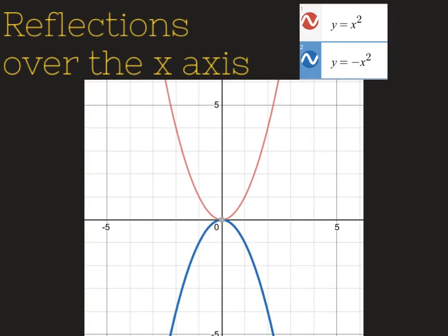Up first you can see that we have a reflection over the x-axis. So that means if I were to look at my x-axis, that's basically where my mirror would be. The red function here is our original — this is what's called a parent function, it's just x squared, a good old-fashioned parabola. Now if you notice our blue function, you can see there's a negative sign in front of the whole function. When it's a negative in front of the whole function, that's what tells you the whole thing is getting flipped over the x-axis.